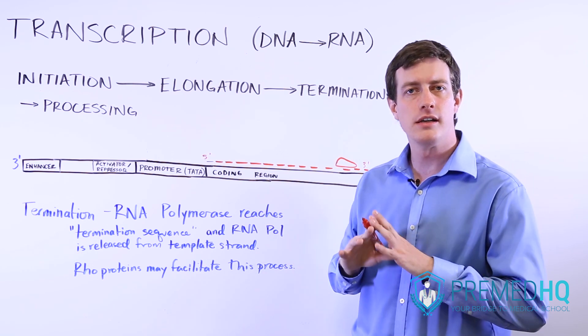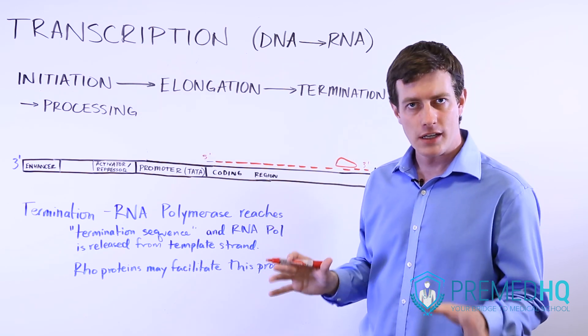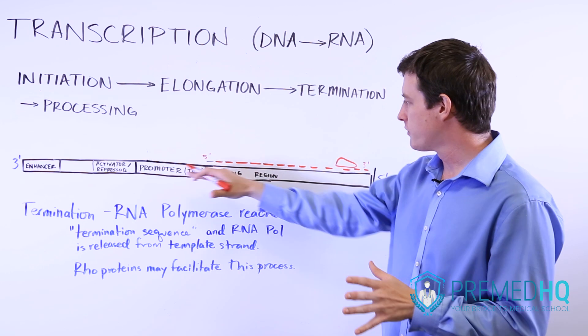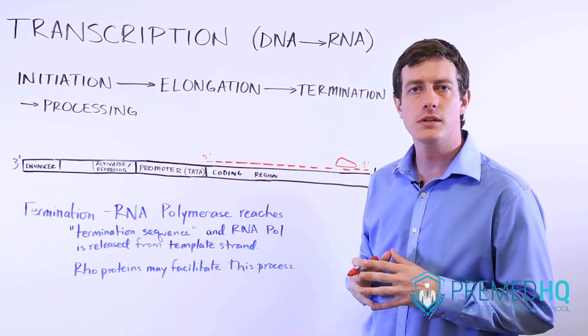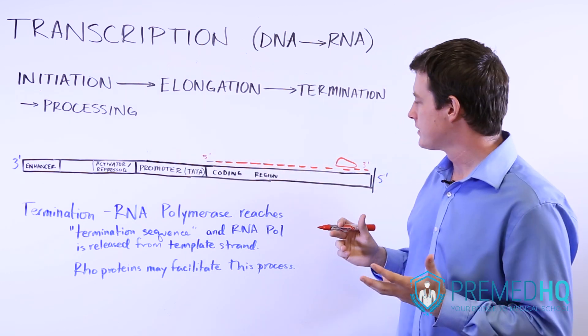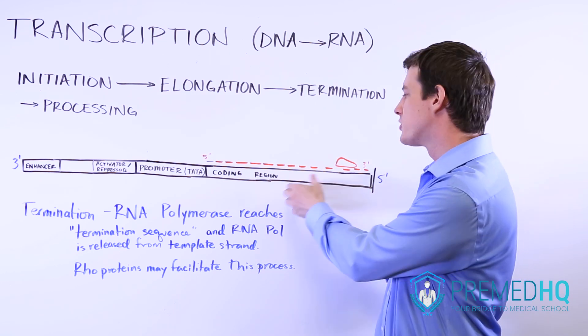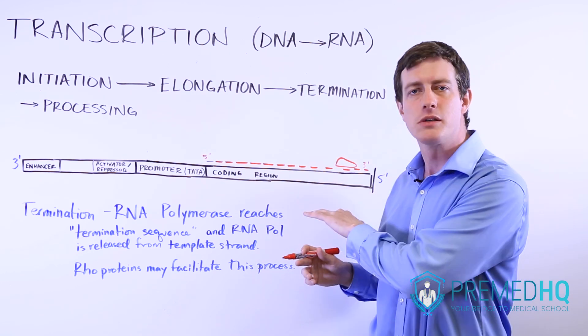how does it know when the process of transcription is completed as far as the primary transcript goes? The way that this happens is that it will meet or approach some kind of termination sequence.